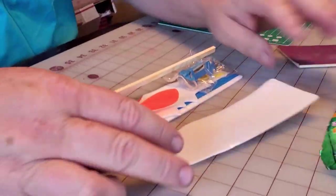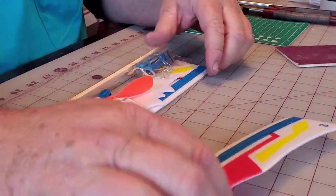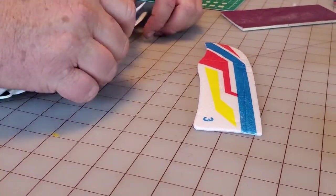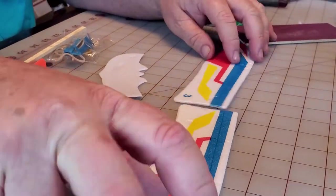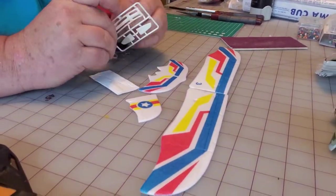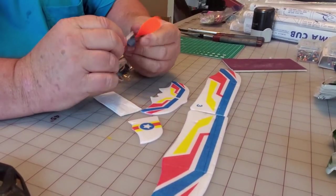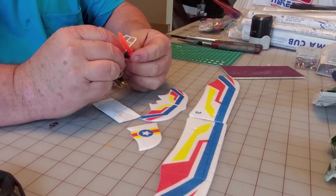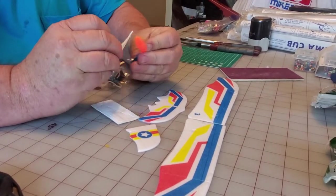So we've got everything out of the package. We've got a couple of wings here, tail feathers, the propeller, which is hanging on to the plastic there.